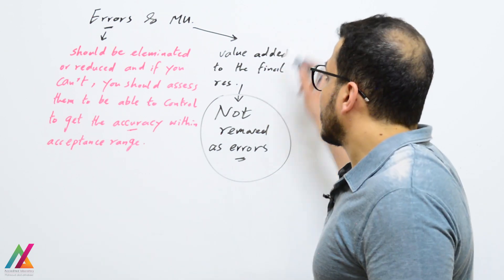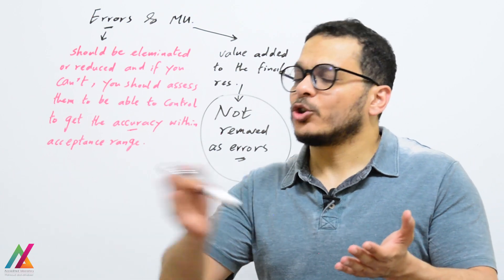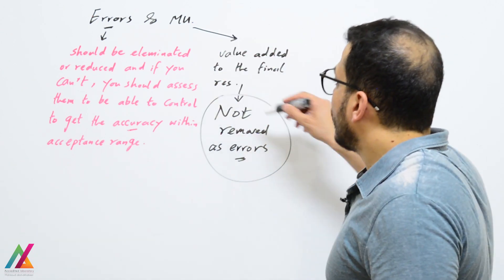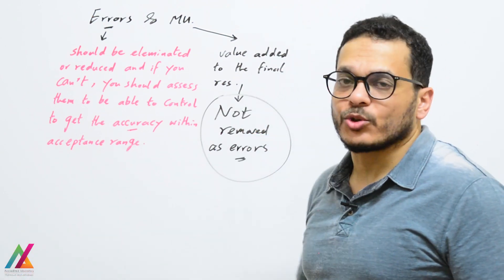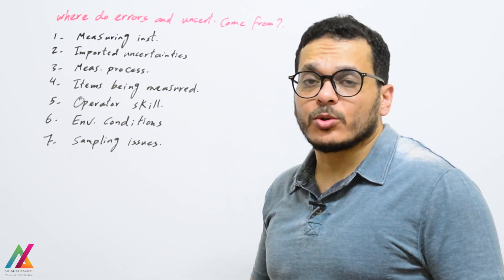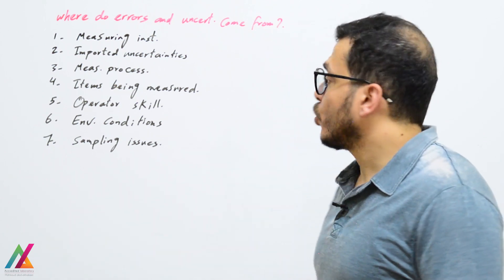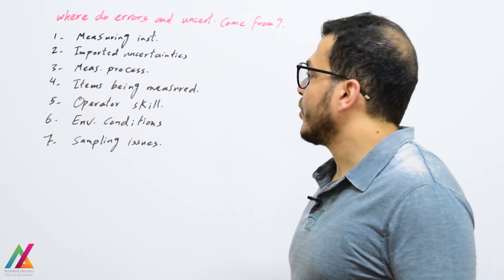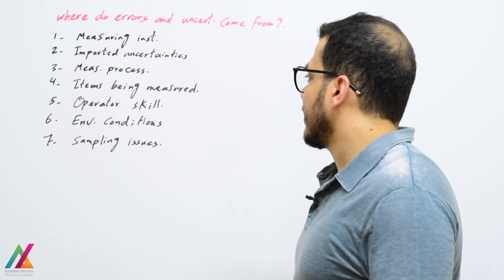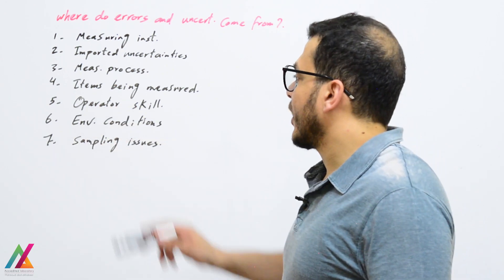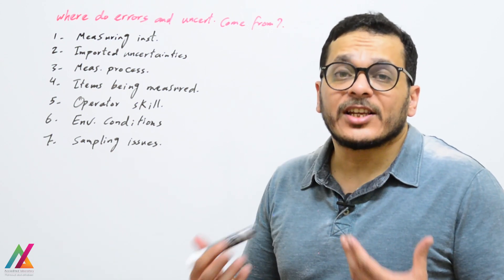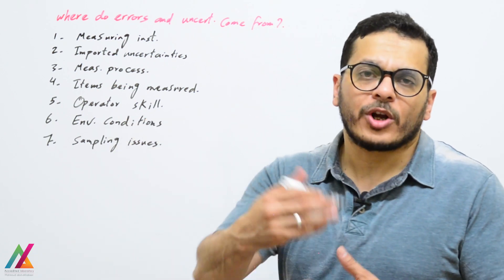Measurement uncertainty, as explained before, is a value that is added — not removed — to the final result to compensate for all effects during the measurement, from sampling up to obtaining the result. Sources of errors and uncertainties include the measuring instrument, other equipment used during sample preparation such as pH meters, balances, or reference standards from calibration certificates. Additional sources include the measurement process, extraction steps, the analyte being measured, the matrix itself, operator skill or analyst competency, and environmental conditions such as temperature, moisture, and sampling issues like sample handling and homogenization.